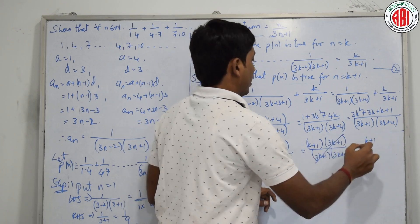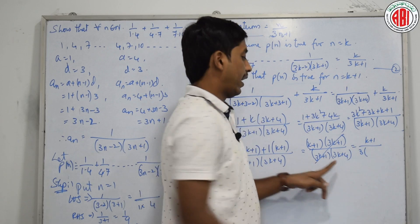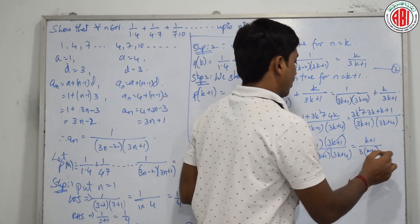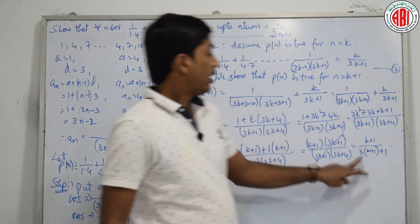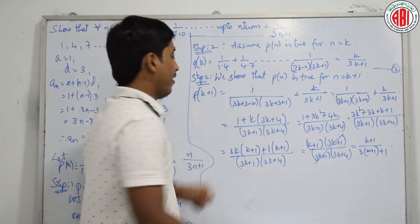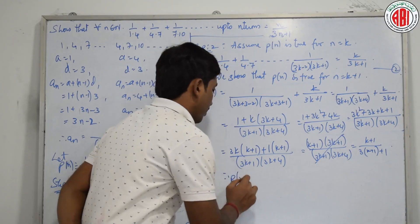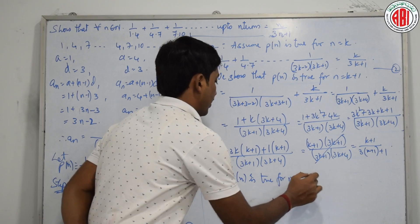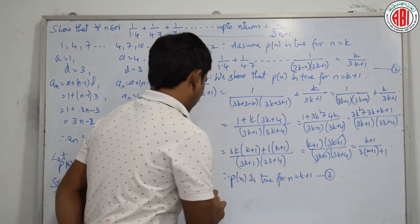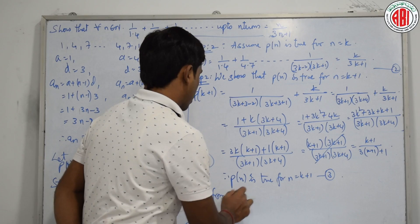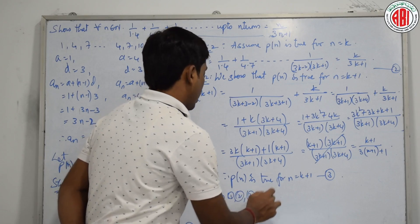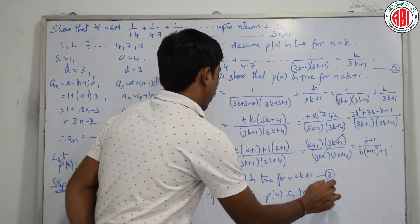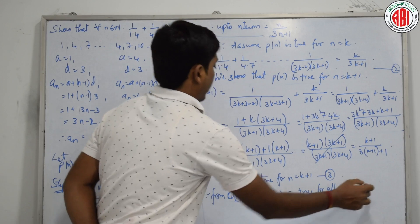The (3k+1) terms cancel, leaving (k+1) divided by (3k+4). Writing 4 as 3 plus 1, this becomes (k+1)/(3(k+1)+1), which matches the required form. Therefore, P(n) is true for n equal to k plus 1. Therefore, from steps 1, 2, and 3, P(n) is true for all n belonging to N.